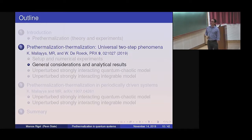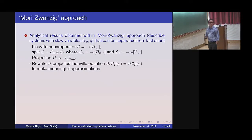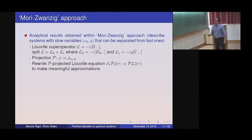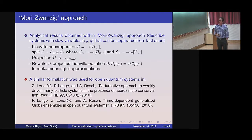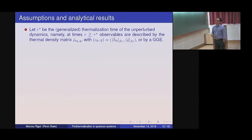The general considerations and results are all work done by Wojciech. There is no perturbation theory for many-body systems in the usual sense — one has to introduce a concept of slow variables and a super-operator, and think about slow variables such as energy and the broken conserved quantity. There is a rewriting of the projection equation, and all the task is to make meaningful approximations. A similar formulation was used for open quantum systems by other collaborators.